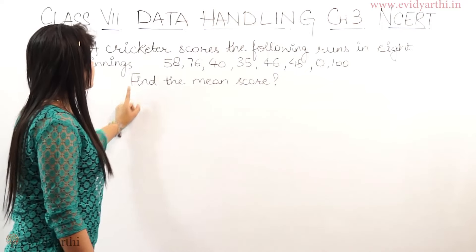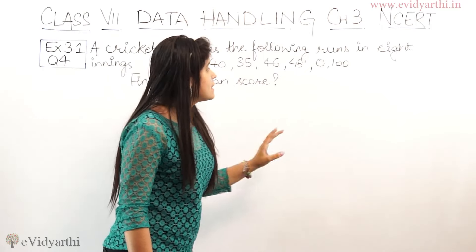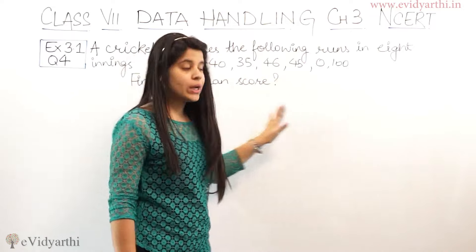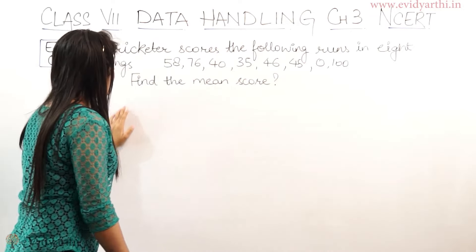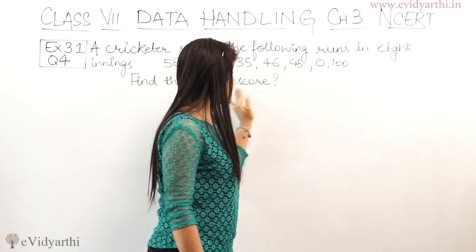In this question, a cricketer scores the following runs in 8 innings. We have to find the mean score.